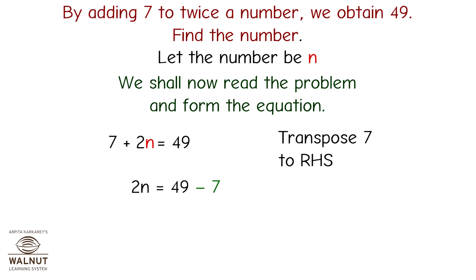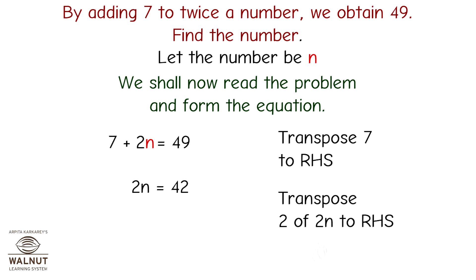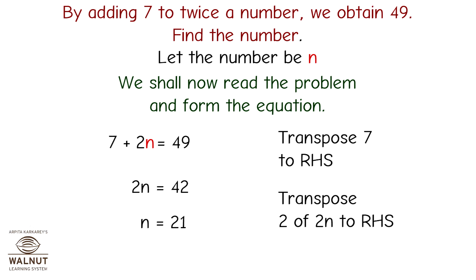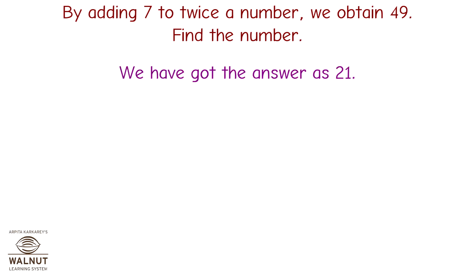Transpose 7 to the RHS: therefore 2n equals 49 minus 7, which equals 42. Transpose the 2 of 2n to the RHS: therefore n equals 42 upon 2, which gives n equals 21. Therefore the number is 21.